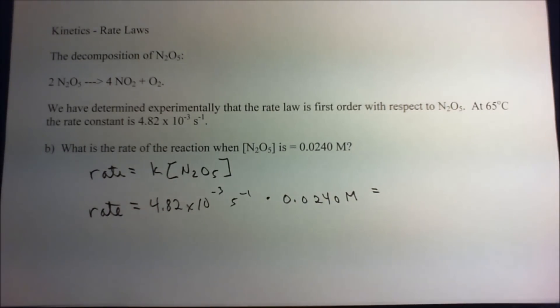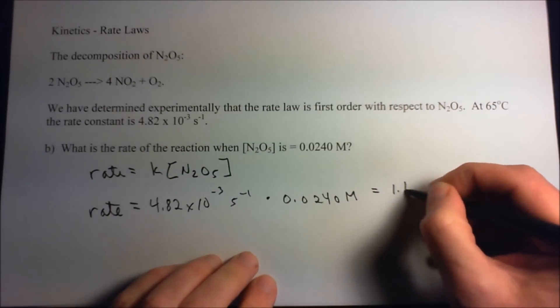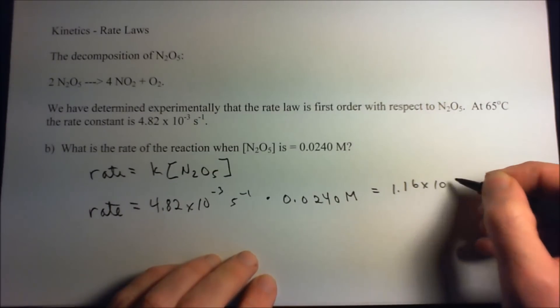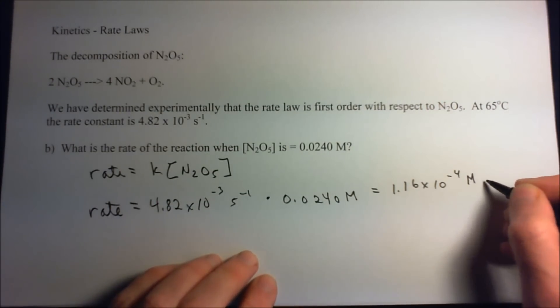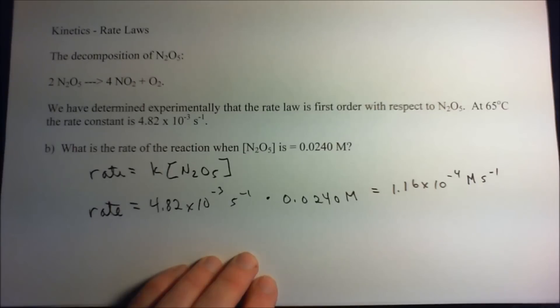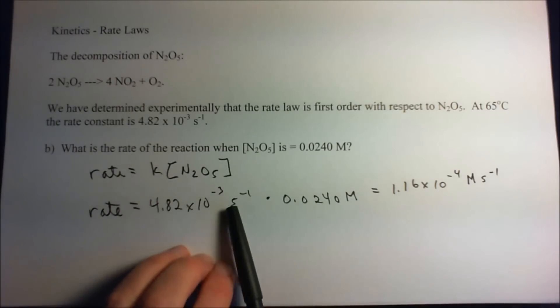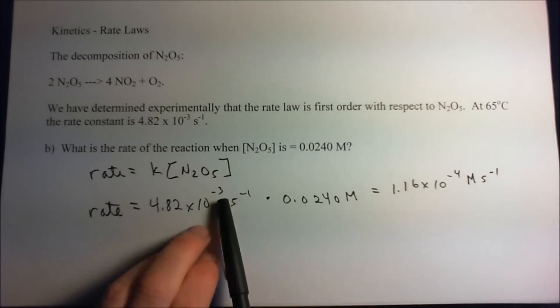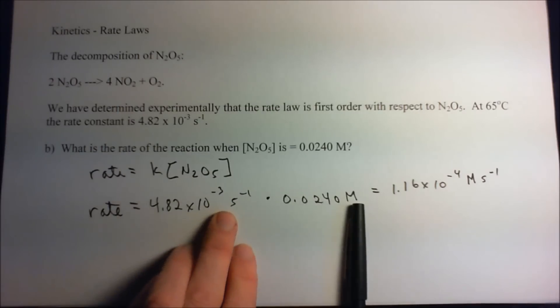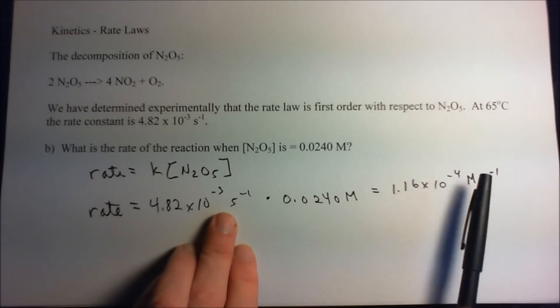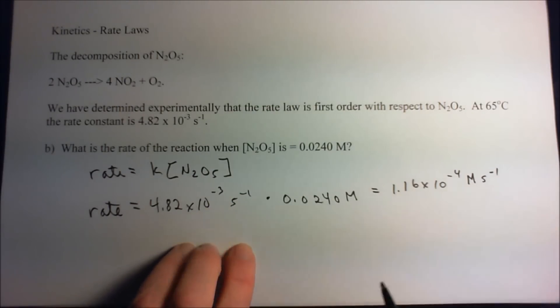And we just plug that in our calculator and we get 1.16 times 10 to the minus fourth molarity per second. I know this is the right units because there's no units canceling here. Our rate constant was in units of per second and we're multiplying times molarity, so it's molarity per second. This is the correct units.